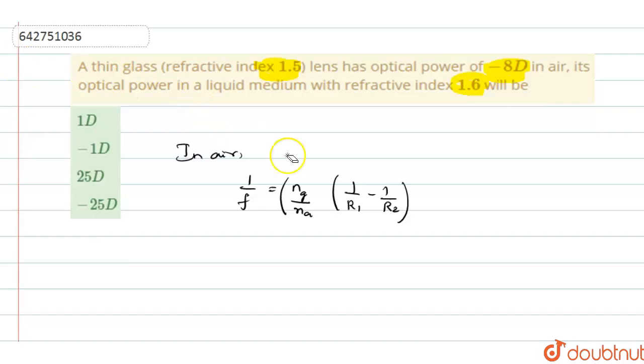And we know that 1 by F, the reciprocal of focal length is nothing but power, which is an air medium.